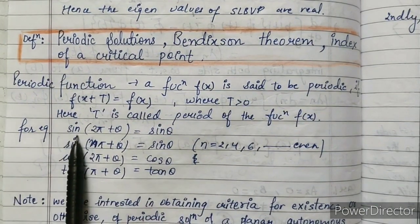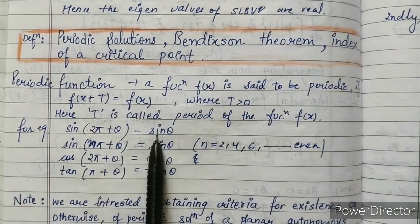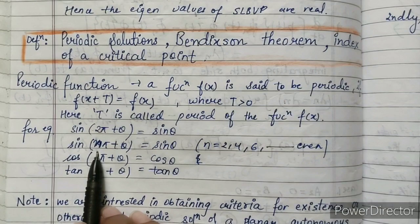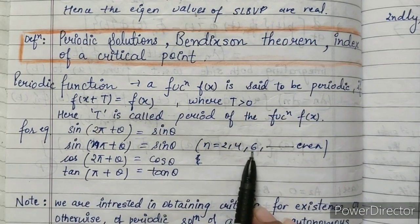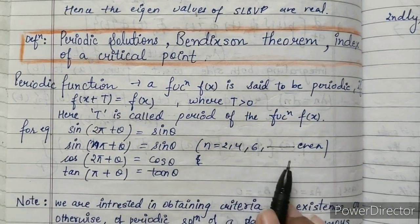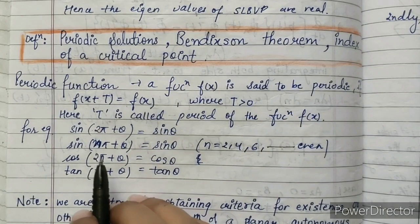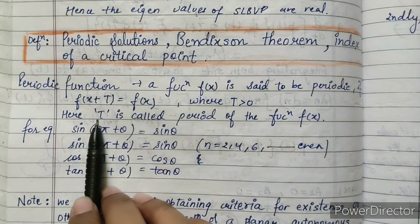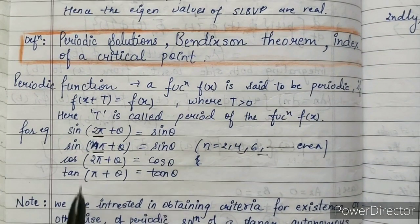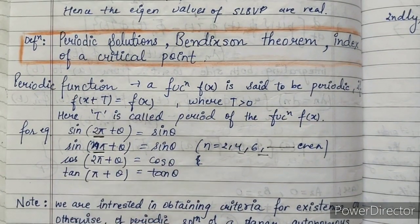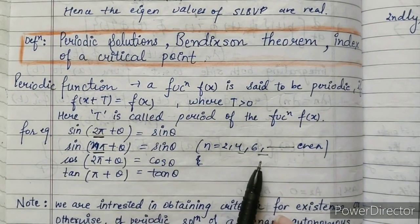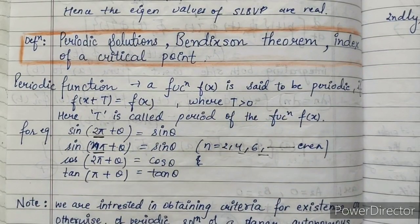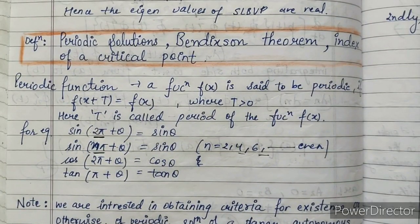For example, sin(2π + θ) equals sin(θ). We could consider nπ where n equals 2, 4, 6, or any even number, but for the function's period, T should be the minimum value. That's why we only consider n = 2 and not 4 or 6 — we want the minimum value of T.